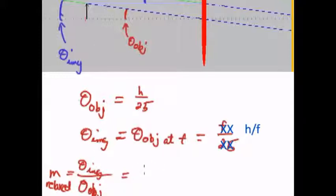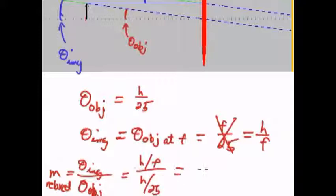Wait, this is going to be h over f. Sorry about that. And so we'll have h over f divided by h over 25, which would just be 25 over f, or more generally, negative q over f.